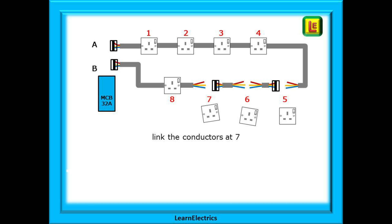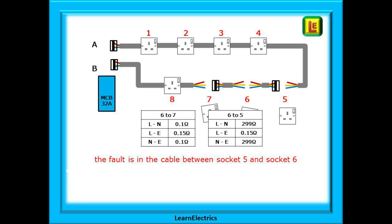Last little bit: remove socket number six and place a link at socket number seven. Now test six to seven, which appears okay on our chart, and then test six to five. The problem is still there. Any test along the neutral conductor returns a high ohms or open circuit reading. The damaged cable must be between socket five and socket six. How easy was that? If we follow a logical method, we will find the fault.